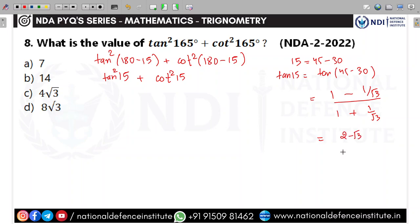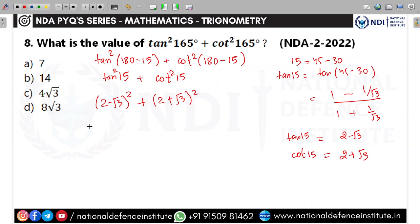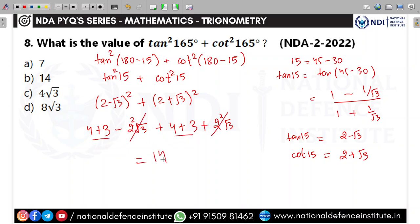tan²15° = (2−√3)² = 4+3−4√3 = 7−4√3, and cot²15° = (2+√3)² = 7+4√3. Adding them: 7−4√3 + 7+4√3 = 14. The second option is correct.